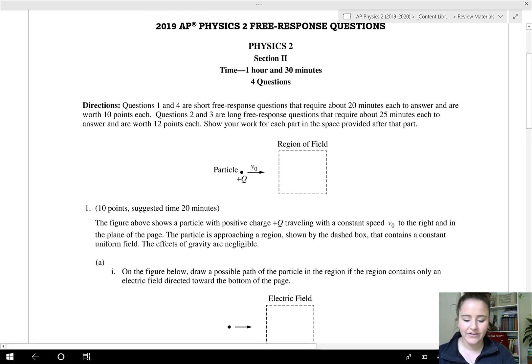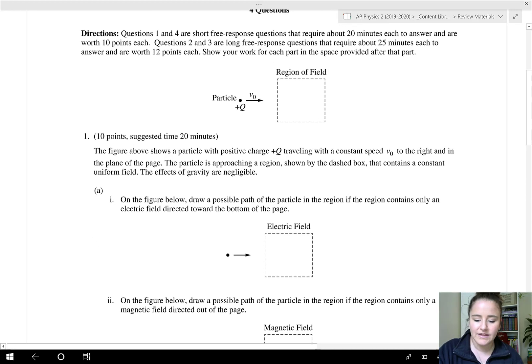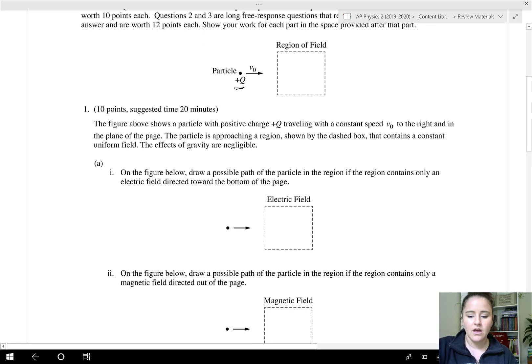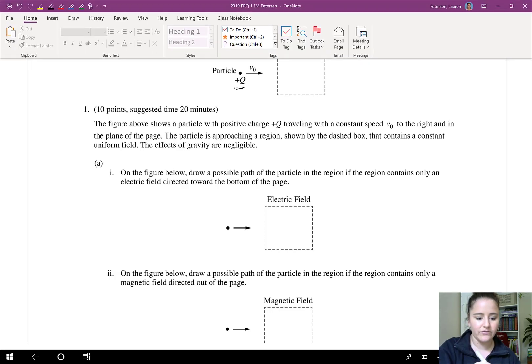What we have going on here is a particle with a speed of plus q traveling with some speed v naught into the region of a field. It's approaching a region that contains a constant uniform field and we're going to ignore the effects of gravity. On the figure below, draw a possible path of the particle in the region if the region only contains an electric field directed toward the bottom of the page.